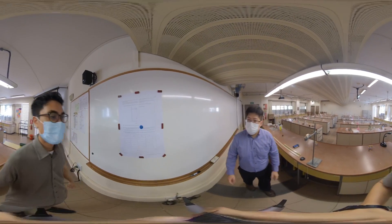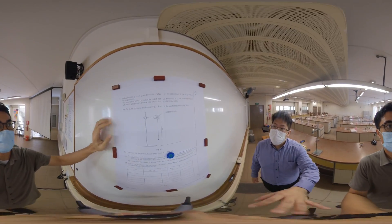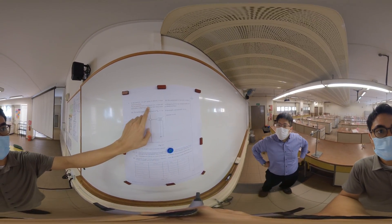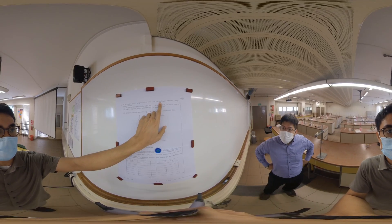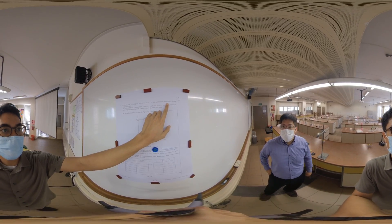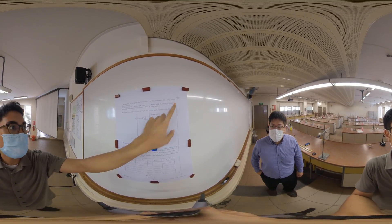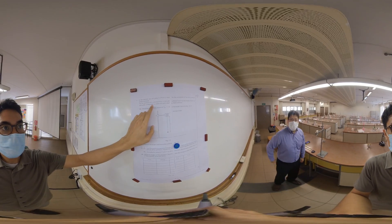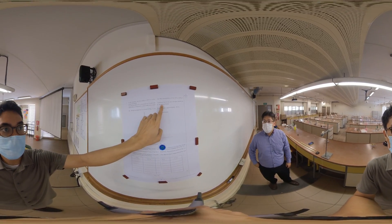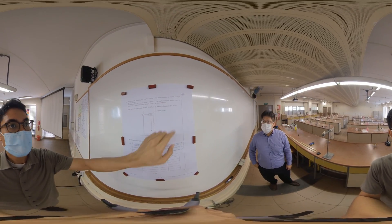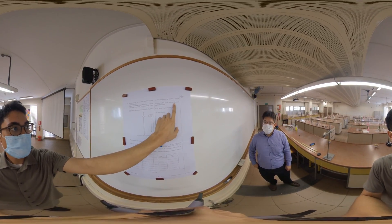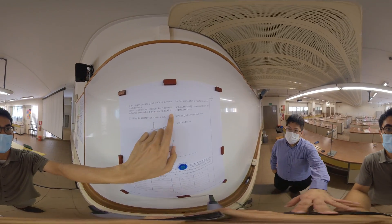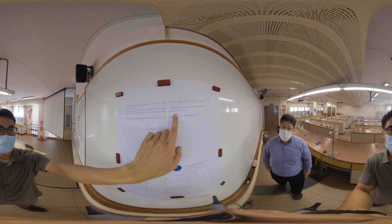Let me bring you to this board here. In this exercise, you are going to obtain a value for the acceleration of free fall G using a simple pendulum. You're provided with a pendulum bob with a thread tied to it, two wooden blocks, a stopwatch, a meter rule, and a clamp stand and boss.